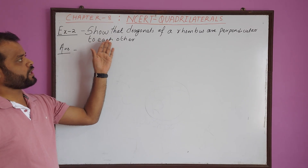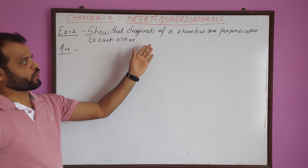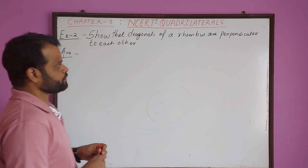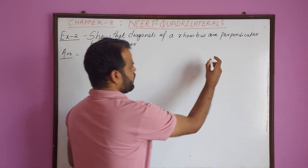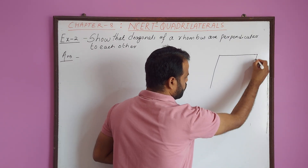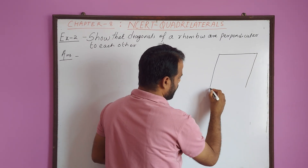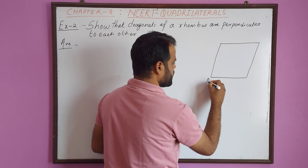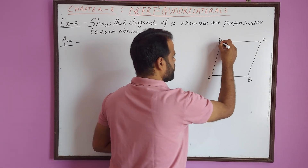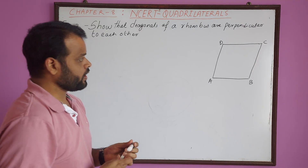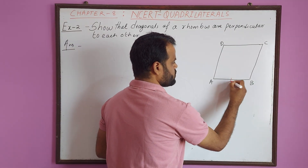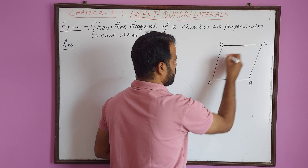The question is to show that the diagonals of a rhombus are perpendicular to each other. Let ABCD be a rhombus. We know that a rhombus is a parallelogram whose all sides are equal.